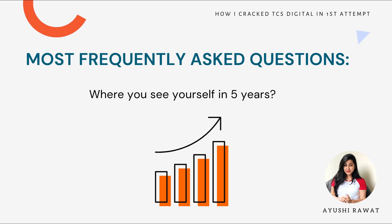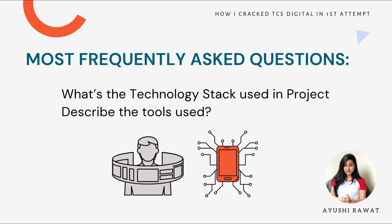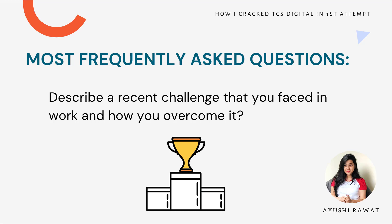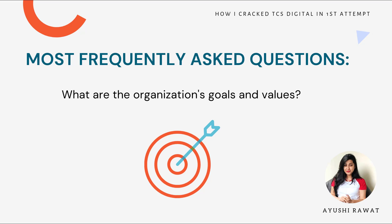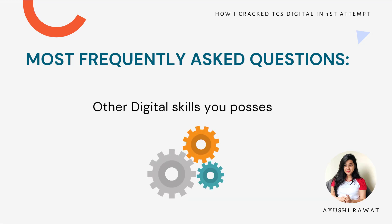If you answer that you see yourself at a senior position, be ready to answer the roles and responsibilities of that position. For your project: briefly describe your project, mention any client interactions, describe your daily job responsibilities, know well about your project architecture, the technology stack used, the tools used, and your domain. Other questions include: describe a recent challenge you faced at work and how you overcame it, what are your organization's goals and values, how do you invest your time outside work, and which language did you use to solve the DCA coding question and why. Know your programming language very well and dig through the basic programming questions.